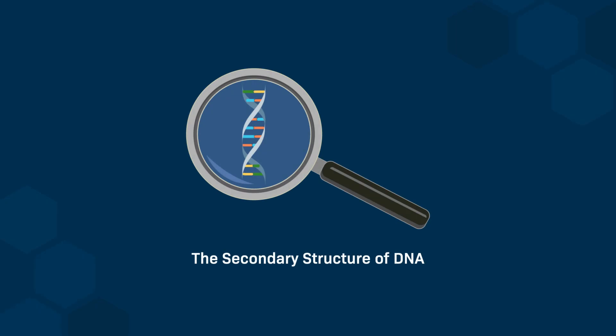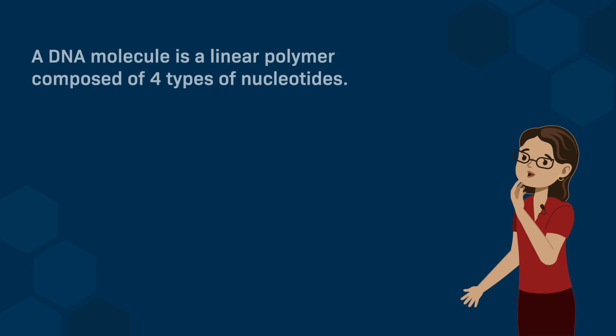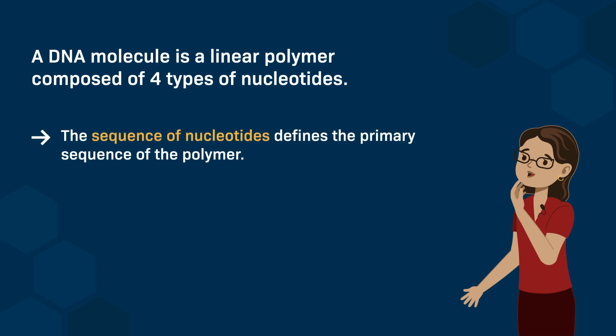In this video, we will discuss the secondary structure of DNA. Let's start by reviewing what we know about the primary structure of DNA. We know that a DNA molecule is a linear polymer composed of four types of nucleotides, each containing one of the following nitrogenous bases: adenine, cytosine, thymine, and guanine. The sequence of these nucleotides defines the primary sequence of the polymer.